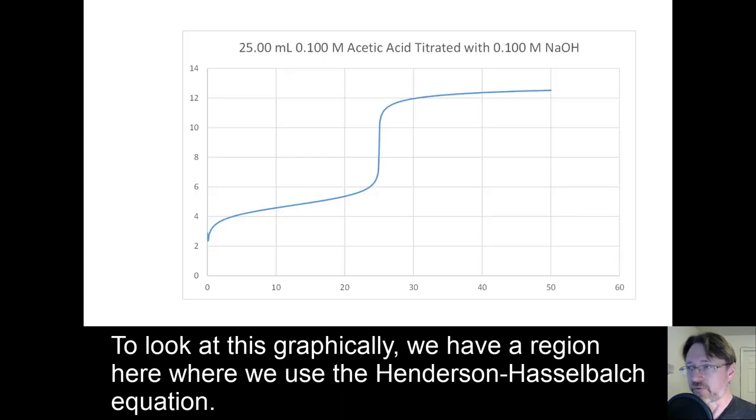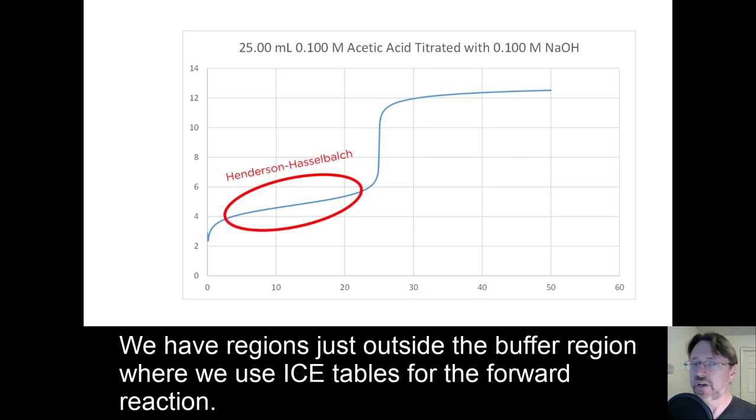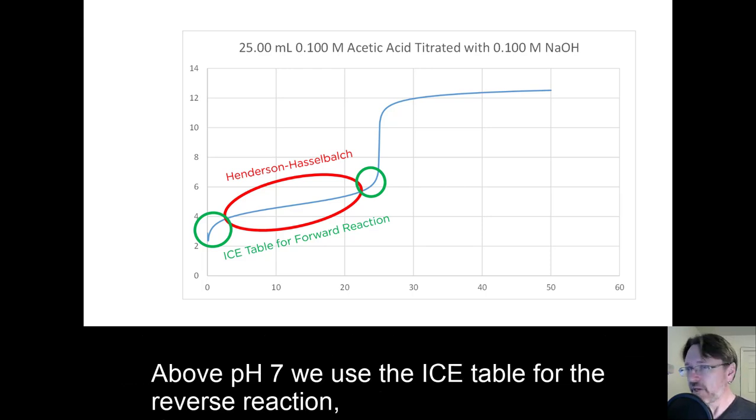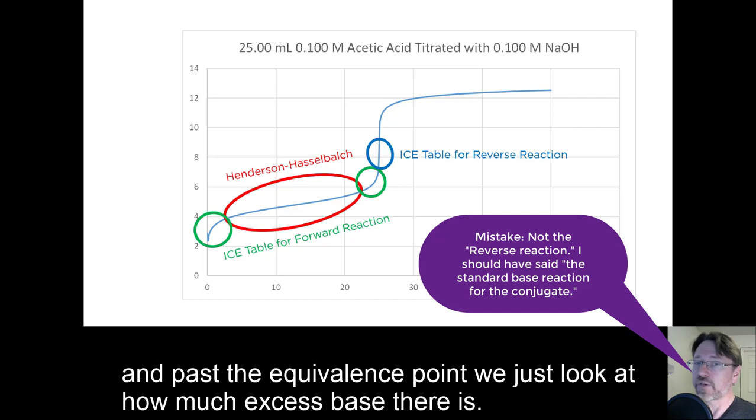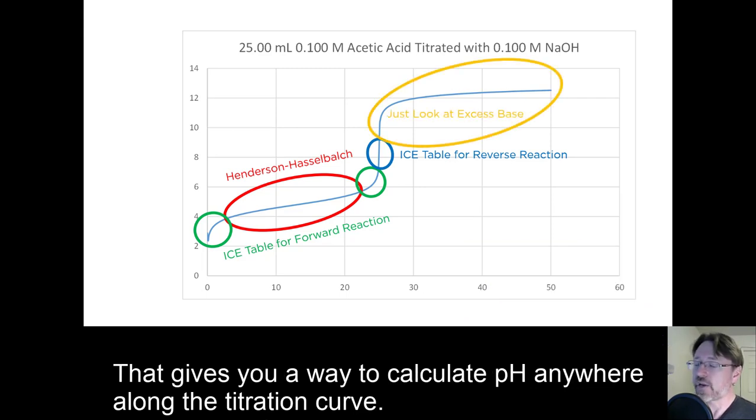To look at this graphically, we have a region here where we use the Henderson-Hasselbalch equation. We have regions just outside the buffer region where we use ice tables for the forward reaction. Above pH 7, we use the ice table for the reverse reaction. And then past the equivalence point, we just look at how much excess base there is. That gives you a way to calculate the pH anywhere along the titration curve.